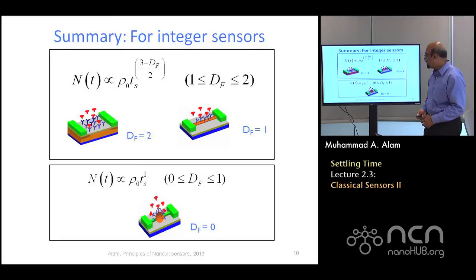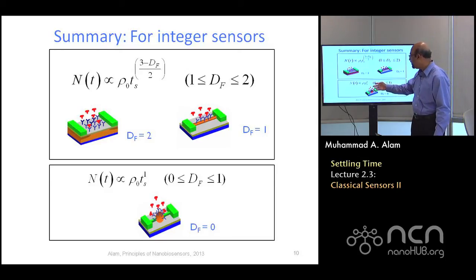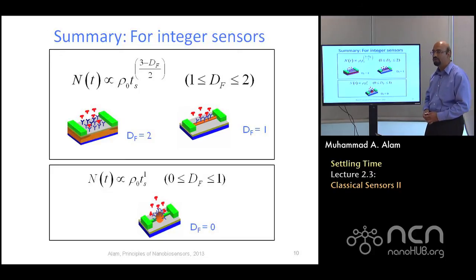On the other hand, for a nanosphere sensor, which has a fractal dimension between zero and one, the response time doesn't go like this, but rather simply as rho naught t to the power one, and, therefore, this doesn't have significant difference compared to how a nanowire sensor captures molecules.